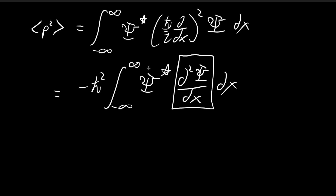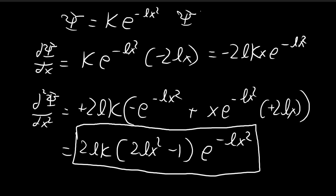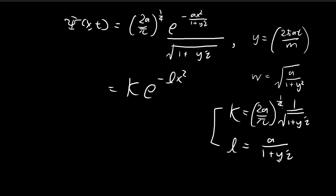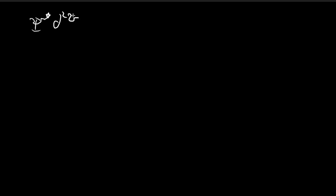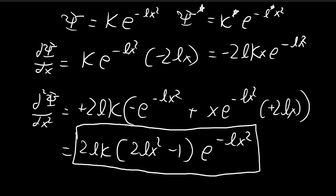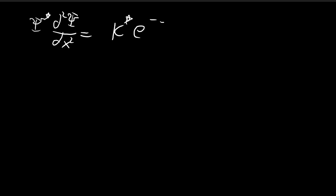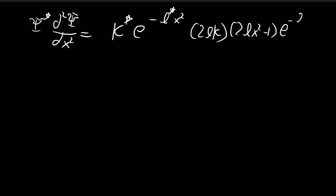Now we apply this with the conjugate of the wave function. The conjugate is equal to the conjugate of k times e to the power of negative l-conjugate times x squared. Recall that both k and l are complex numbers, so when taking the conjugate of the wave function we take the conjugate of both terms. Substituting, we have the conjugate multiplied by the second derivative: 2lk times 2lx squared minus 1, times e to the power of negative lx squared.